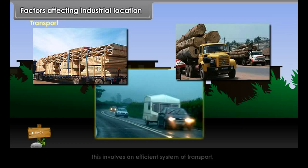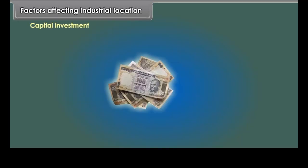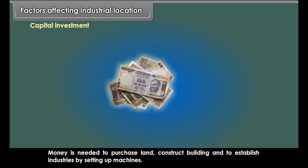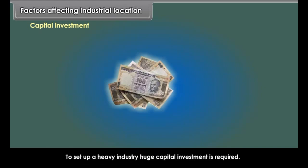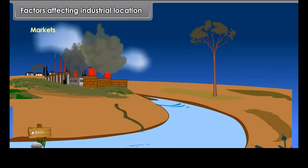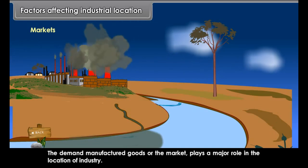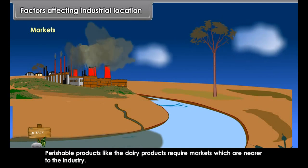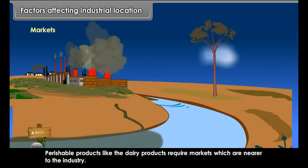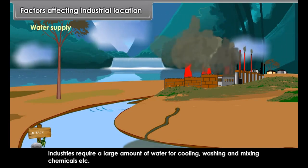Raw materials need to be taken to the factory for processing while processed goods need to be taken to the market, requiring an efficient system of transport. Areas with good transport systems have developed industries. Capital investment is also key — money is needed to purchase land, construct buildings, and set up machines. Banks, financiers, and insurance companies provide financial help. The demand of manufactured goods — the market — plays a major role, with perishable products like dairy requiring markets nearer to the industry.